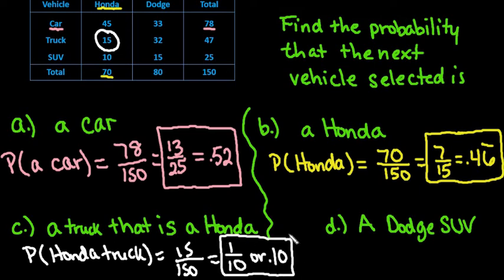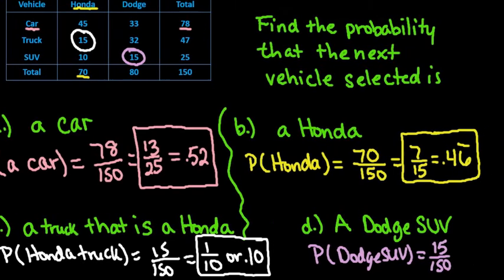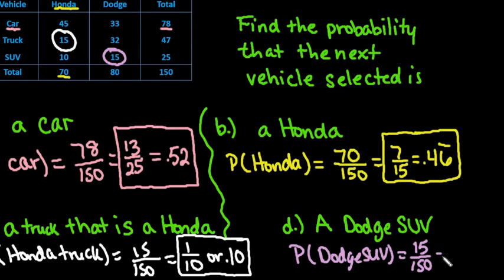The last example: what is the probability that the vehicle is a Dodge SUV? Looking for Dodge and SUV together, there are 15 total Dodge SUVs. This is the same value as the last problem — just a coincidence. So the probability is 15 over 150, which reduces to 1 over 10, or 0.10.